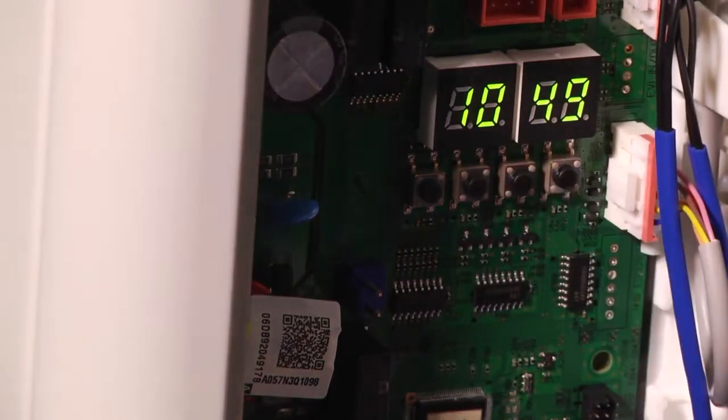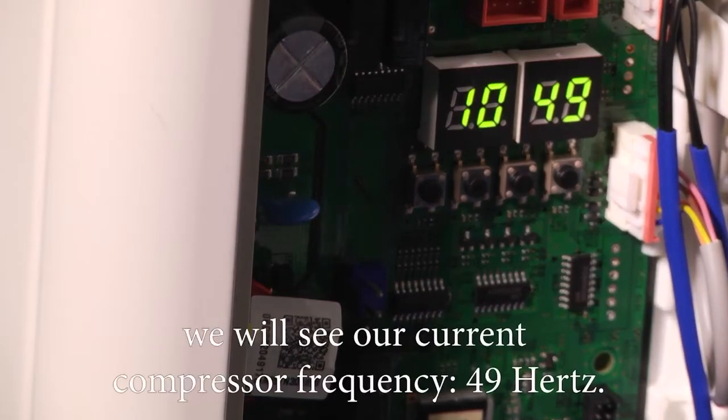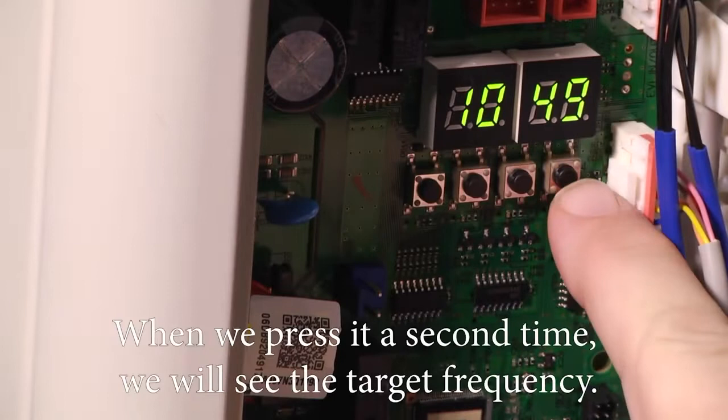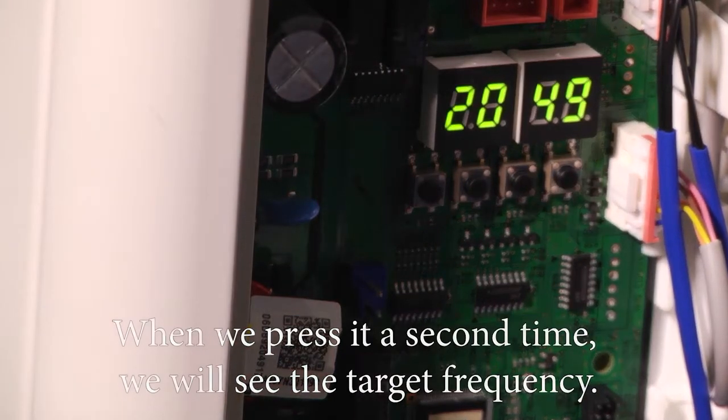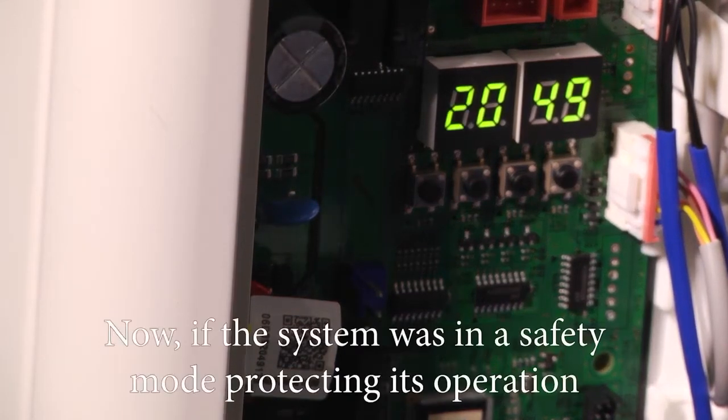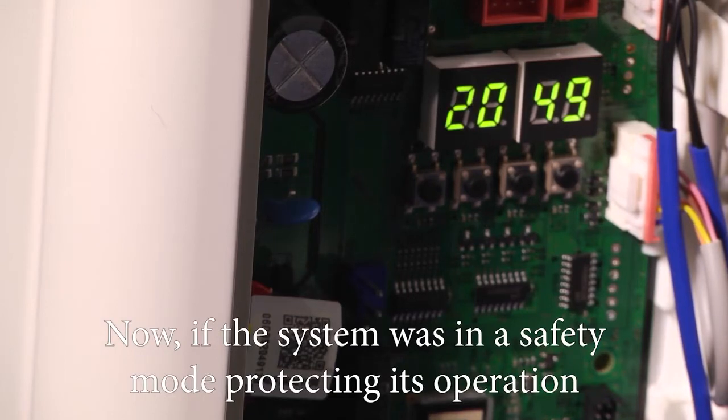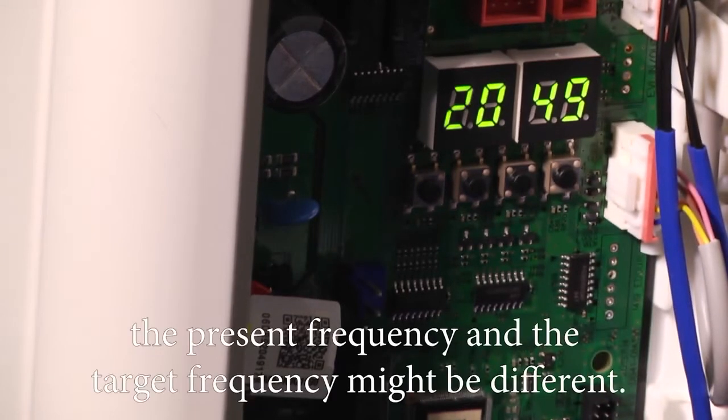When we press the K4 button once, we'll see our current compressor frequency, 49 Hertz. When we press it a second time, we'll see the target frequency. Now, if the system was in a safety mode protecting its operation, the present frequency and the target frequency might be different.